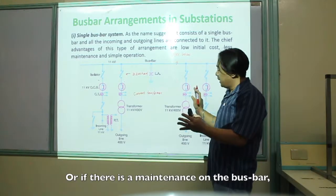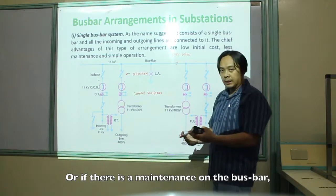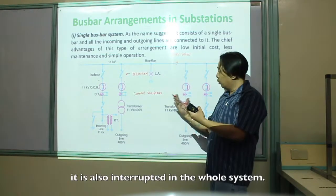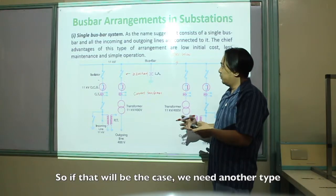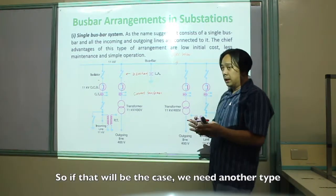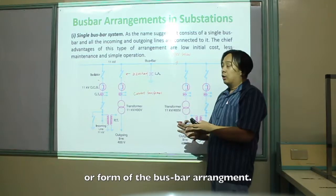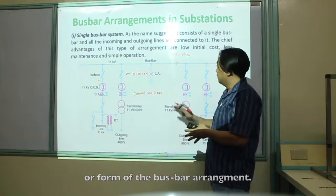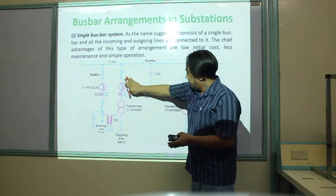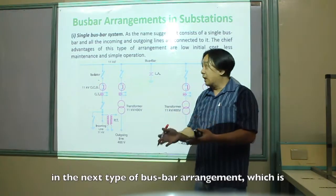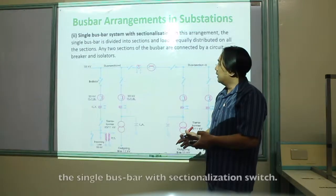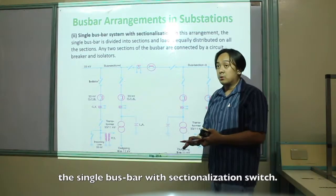If there is maintenance on the bus bar, the whole system is also interrupted. So in that case, we need another type or form of bus bar arrangement. This limitation will be compensated by the next type of bus bar arrangement.